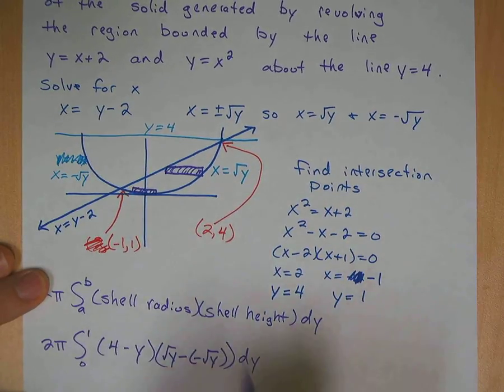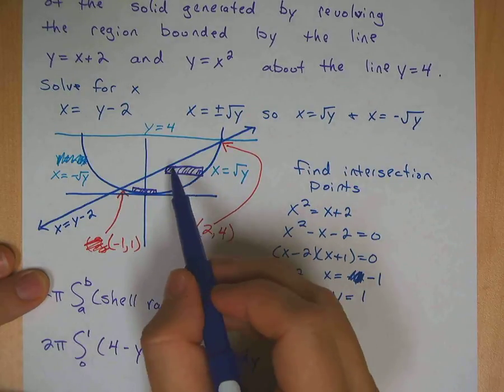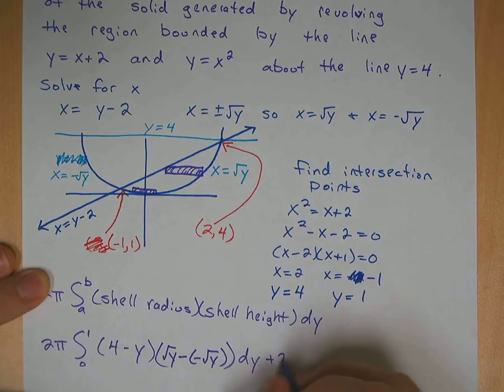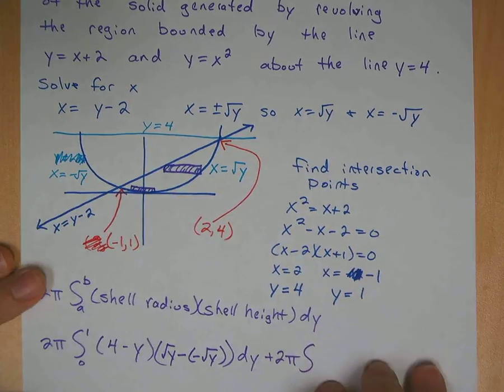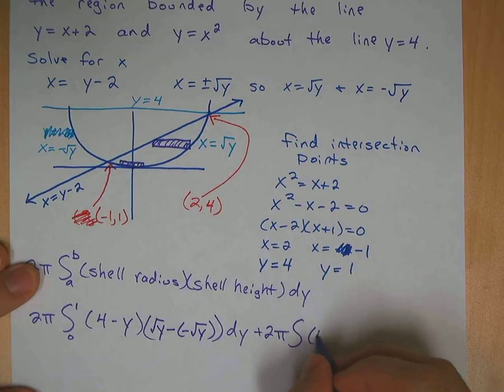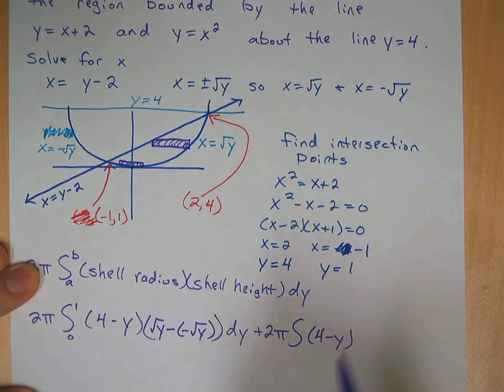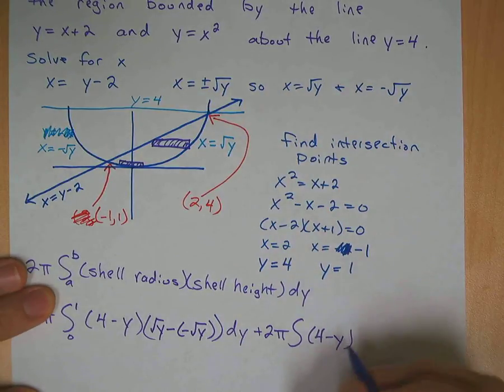Now your next integral, where you have two different functions having a top and bottom, or a right and left, so 2 pi, we'll talk about our limits in a second, 2 pi. It's still going to be 4 minus y, because we're still talking about the same circle going around that y equals 4. So 4 minus y.